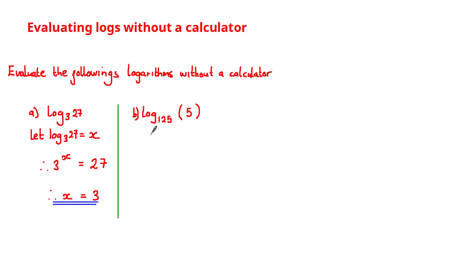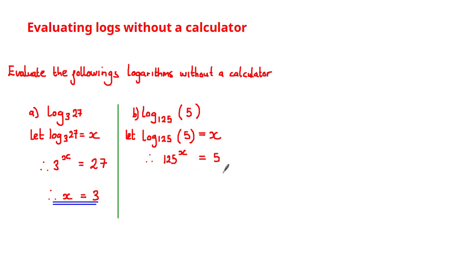Let's have a look at the next one: log base 125 of 5. We let this value equal x, giving us the power equation 125 raised to the power of x is equal to 5. To find x, we need to think about indices. If raising a value to a power gives a smaller result, that indicates the power is either fractional or negative. Looking at these numbers, we know the cube root of 125 is equal to 5, and therefore x is equal to one third.